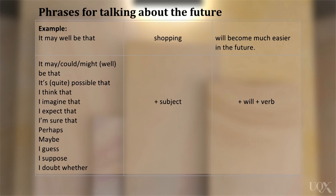Here are the phrases to practice: 'It may well be that.' 'It could well be that.' 'It might well be that.' 'It's quite possible that.' 'I think that.' 'I imagine that.' 'I expect that.' 'I'm sure that.' 'Perhaps.' 'Maybe.' 'I guess.' 'I suppose.' 'I doubt whether.'